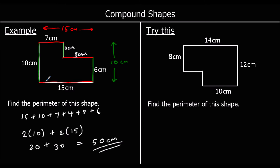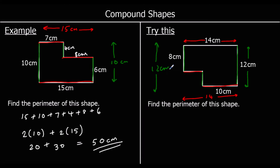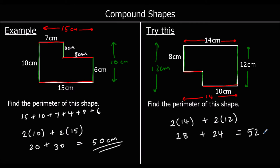One question for you to try — give this one a go. We could work out the missing lengths, or we can say the total top is 14, which means the two lengths along the bottom must equal 14. The total side is 12, so the two lengths on the other side must also add up to 12. The total perimeter is two 14s and two 12s: 28 plus 24 is 52 cm.